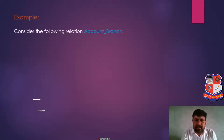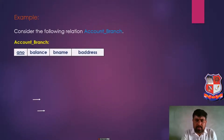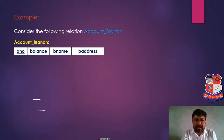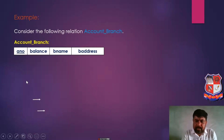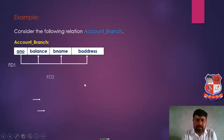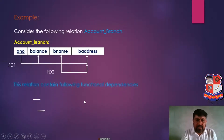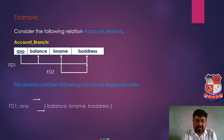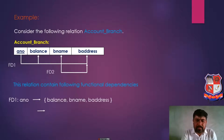Consider the following relation account_branch. We have a relation account_branch with 4 attributes: A-Number, Balance, B-Name and B-Address. A-Number is the primary key, so A-Number is a prime attribute. Balance, B-Name and B-Address are non-prime attributes.